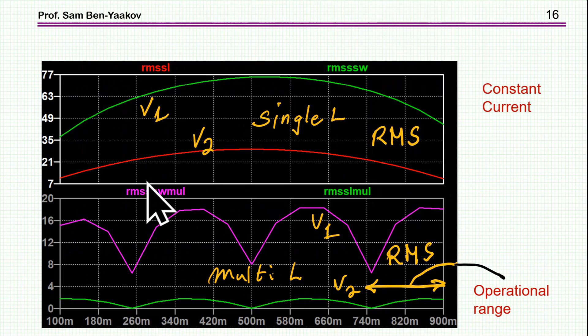And here I'm showing the RMS values. This is for the single inductor. And here is the function of the duty cycle. We have a maximum at 0.5, and this is for the two sides. This is the inductor side, this is the switching side.